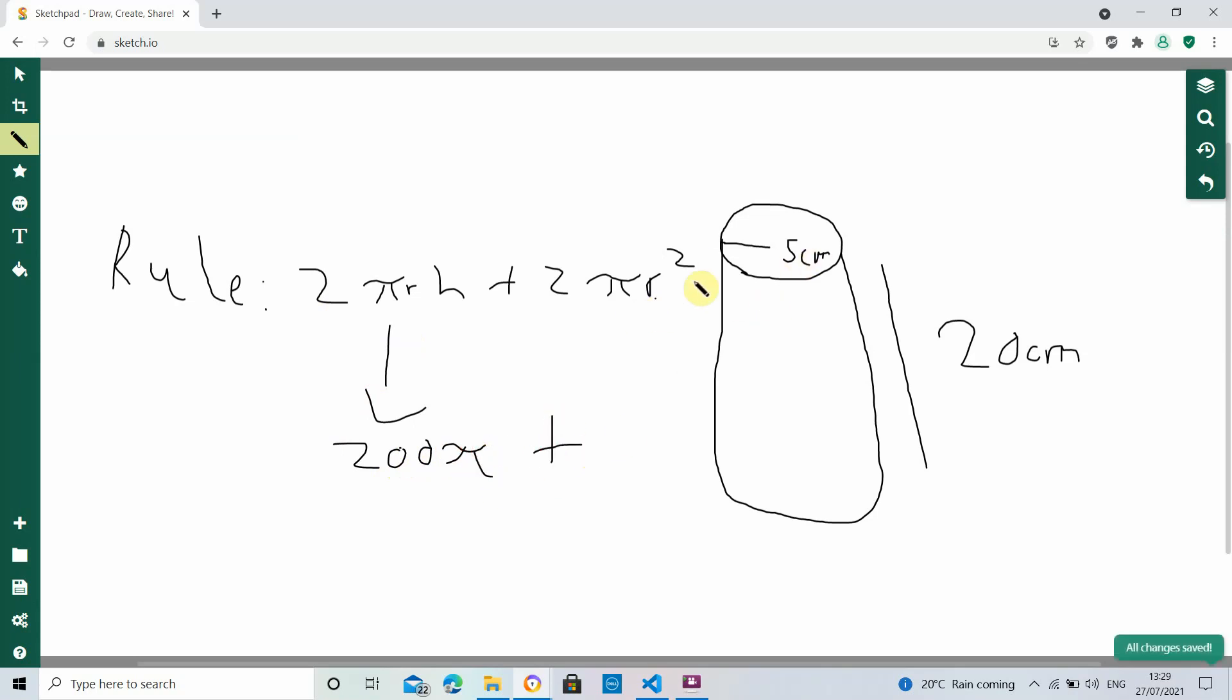And 5 squared, that's 25. 25 times pi is 25 pi. 25 pi times 2, that's 50 pi.